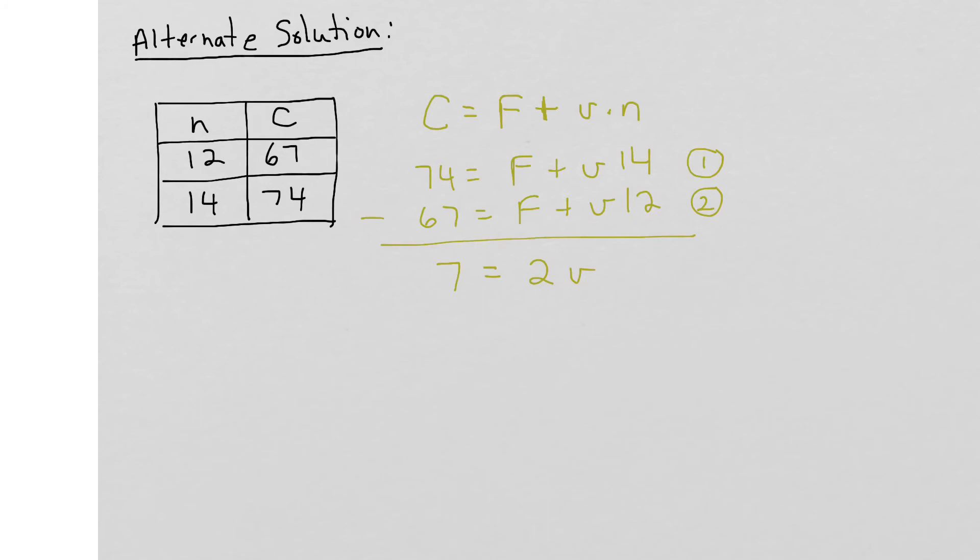And this would be 14 V's minus 12 V's would leave me with 2 V's. Solving for V, I divide both sides by 2, and I end up with 3.5 equals V. This is essentially what we did earlier when we just looked at the difference in the n column versus the C column, and then what we did is we divided the cost by the number of visits to get the cost per visit. And that's exactly what V represents, the cost per visit here.